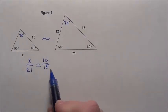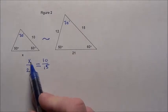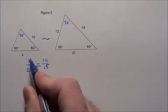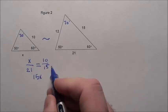So now we have this proportion and we simply do the cross product. 15 times x equals 10 times 21.